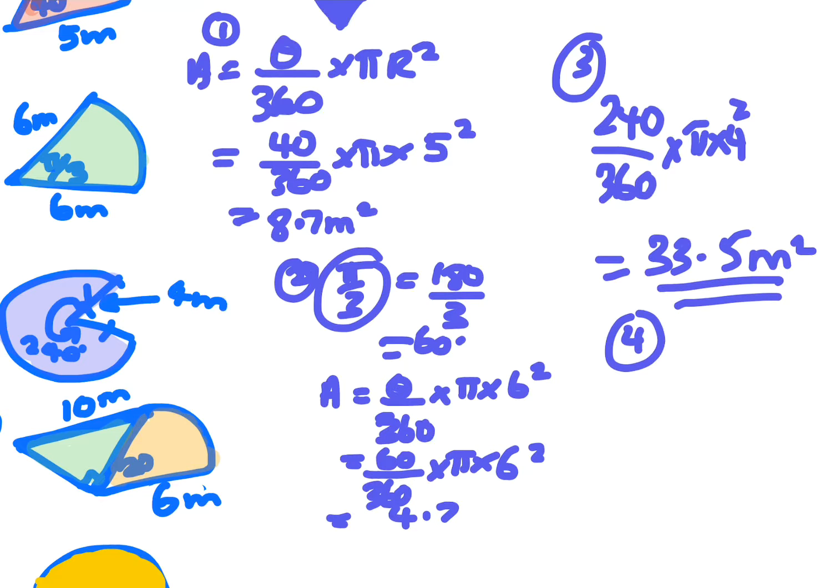Number four, that angle there is 20. So it's 20 on 360 because that's what fraction of the whole circle it is, times pi times six squared. So if you have 20 on 360 times shift pi times six squared, you end up with 6.3 meters squared.